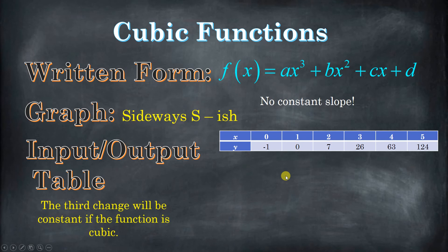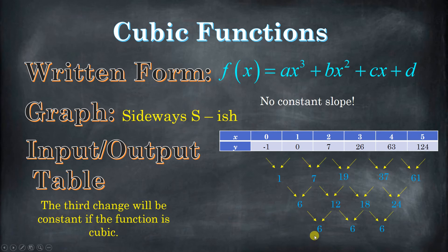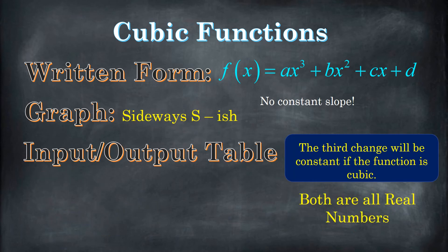If you have an input-output table and you're being asked what kind of function it is, you do just like before — find the change between consecutive outputs. If the first change is constant, it's linear. This one's not. So you go ahead and do it again — take the differences again: 6, 12, 18, and 24. The second change isn't constant either, so you do it again. Hopefully the third one will be, and in this case it is — a change of 6. That third change is constant, which means the function is cubic. Summary: first change constant = linear; second change constant = quadratic; third change constant = cubic.